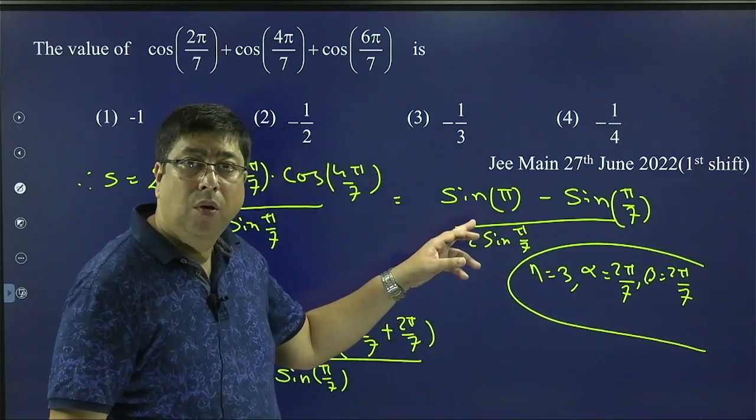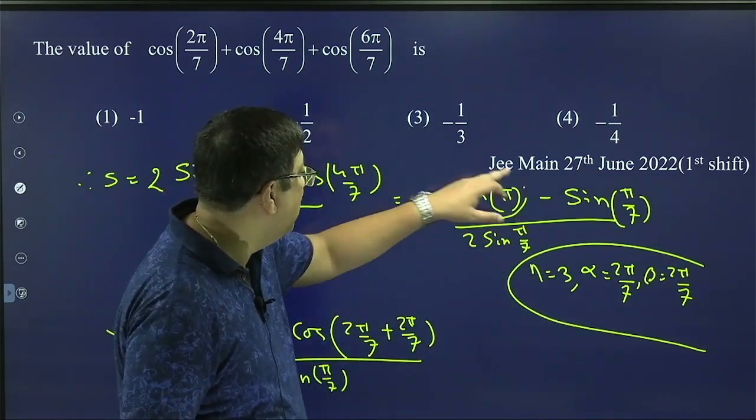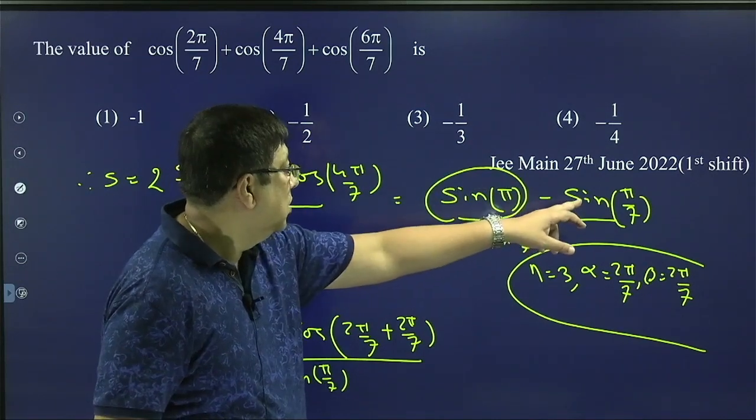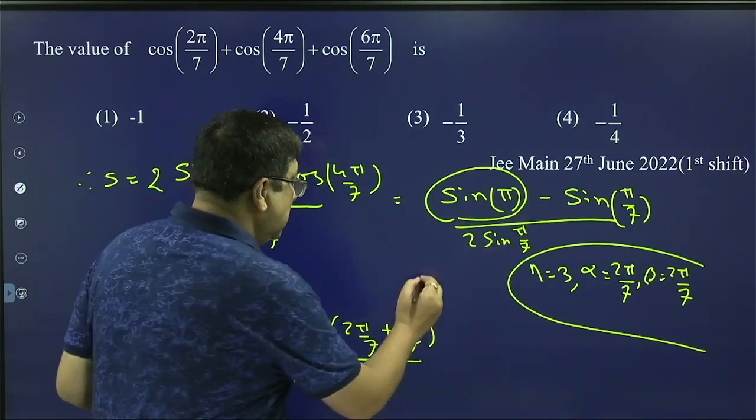Sin π is 0, we know. We know that sin π is 0. Therefore, this portion is coming to be 0. So just sin(π/7) is cancelled. Answer is to be minus half.